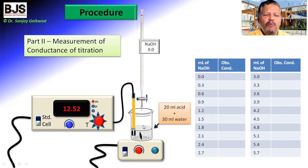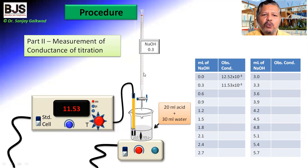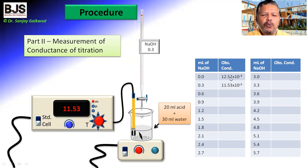We record this reading directly in the observation table as 0 ml addition of NaOH. Then, after a time interval, we add 0.3 ml of NaOH from the burette to this solution and stir. After dipping the conductivity cell, we observe the reading is 11.53 × 10⁻³. When NaOH is added, the OH⁻ ions interact with the H⁺ ions from HCl and get neutralized. Therefore, the hydrogen ion concentration decreases, and hence conductivity drops to 11.53 × 10⁻³.